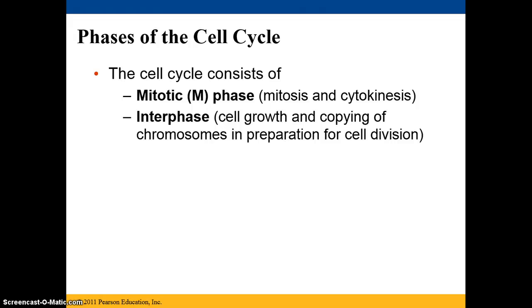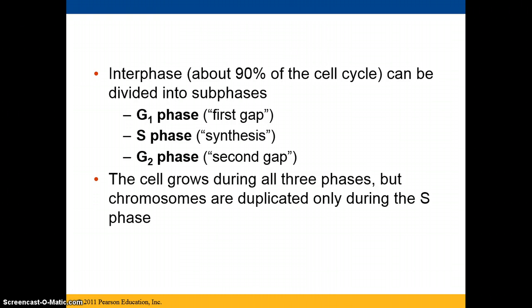The cell cycle in a eukaryotic cell consists of a mitotic phase, or M phase, which includes mitosis and cytokinesis, and interphase — the phase of cell growth and chromosome copying, essentially the cell's normal life. Interphase takes up about 90% of the cell cycle and is divided into sub-phases: G1 (first gap), S (synthesis), and G2 (second gap). The cell grows during all of these phases, but chromosomes are only duplicated during the S phase — synthesis means to build, so we are building more DNA during the synthesis phase.